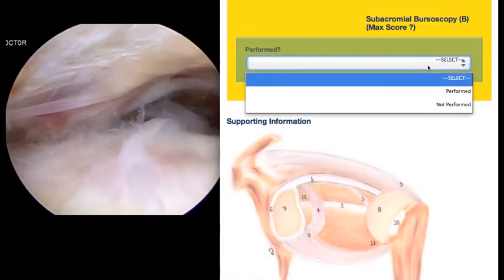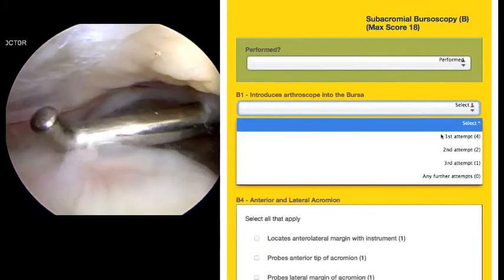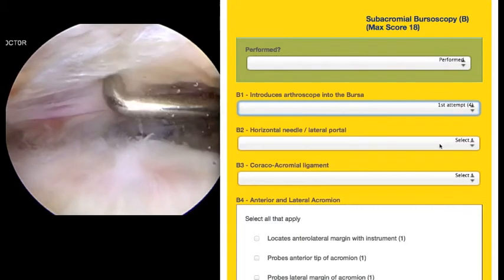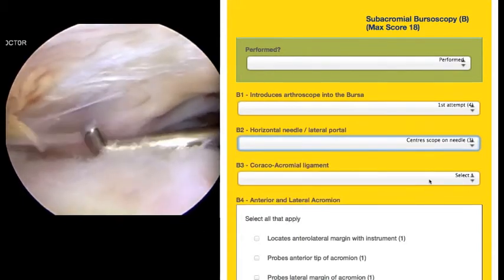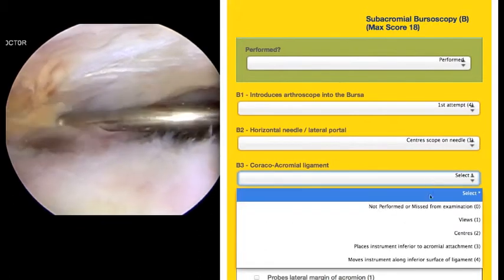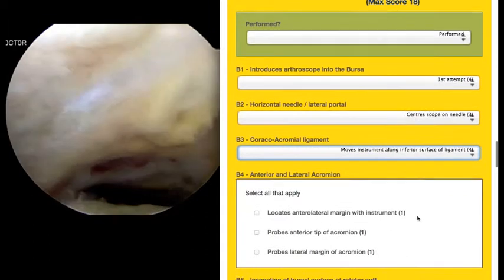A similar procedure is undertaken for the subacromial bursa, if this is visualized. There is a score for introducing the arthroscopy into the bursa in a timely fashion, for the ability to introduce an instrument, and for identifying or palpating the major structures.